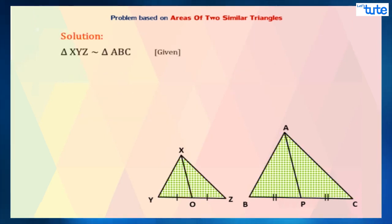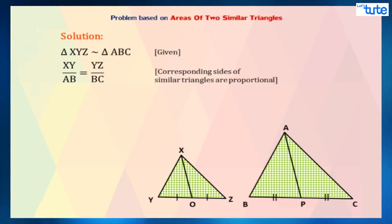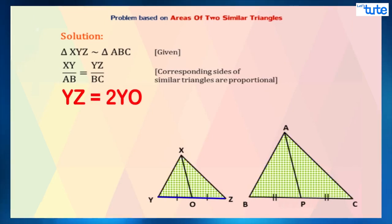It is given to us that triangle XYZ is similar to triangle ABC. Since corresponding sides of similar triangles are proportional, we can say that XY upon AB equals YZ upon BC. It is also given that XO and AP are medians of triangle XYZ and triangle ABC respectively. Therefore, YZ can be written as 2YO and BC can be written as 2BP.